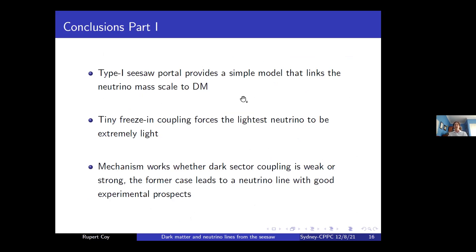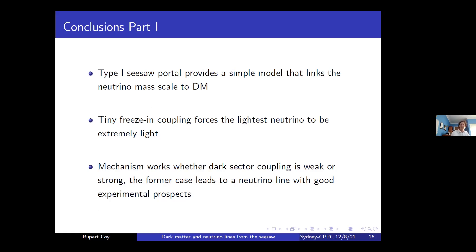To summarize the first project: a simple seesaw portal connects seesaw parameters to dark matter parameters. The dark matter abundance is linked to neutrino masses, predicting a very small lightest neutrino mass. This holds regardless of whether the dark sector coupling is weak (freeze-in then freeze-in again) or stronger (thermalization). In the weak coupling scenario, the dark matter eventually decays producing an observable neutrino line.